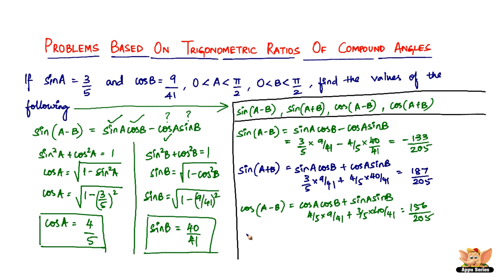The final one is cos A plus B. Cos A plus B is cos A cos B minus sin A sin B, which is 4 by 5 times 9 by 41 minus 3 by 5 times 40 by 41. This gives you minus 84 divided by 205.